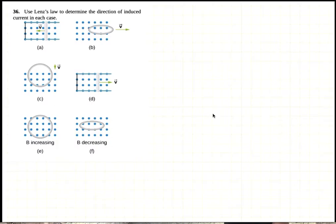So for part A, as this rod moves to the left, the flux through this loop is decreasing because the area is decreasing.